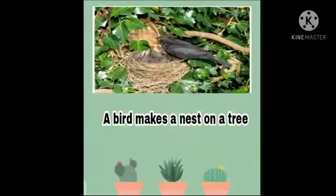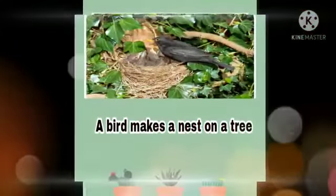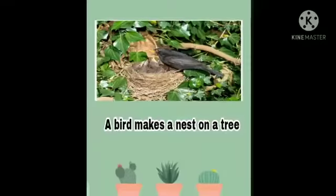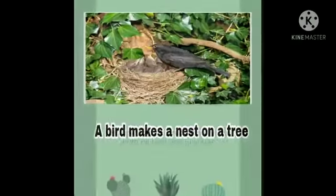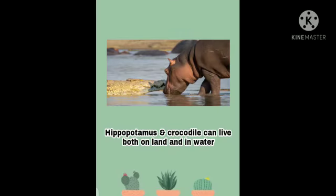A bird makes a nest on a tree. Hippopotamus and crocodile can live both on land and in water. I hope that you enjoyed this lesson.